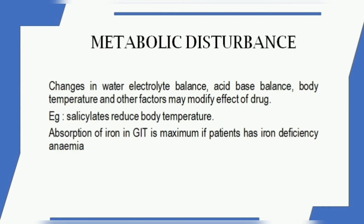Metabolic Disturbances can affect drug dosing. A drug may change the water-electrolyte balance, acid-base balance, and body temperature. For example, salicylate lowers body temperature, and in the gastrointestinal tract, certain conditions affect iron absorption. In iron-deficiency anemia, metabolism and posology are directly impacted.